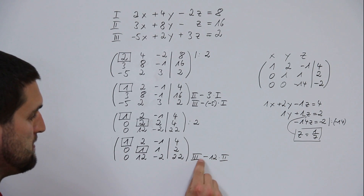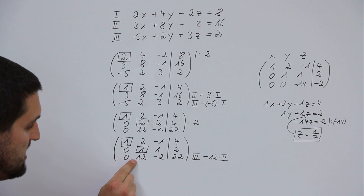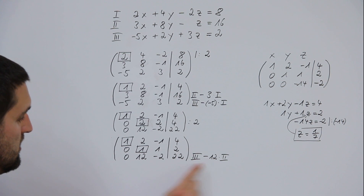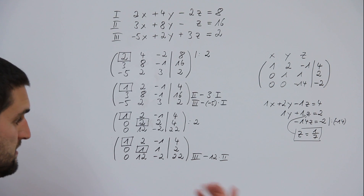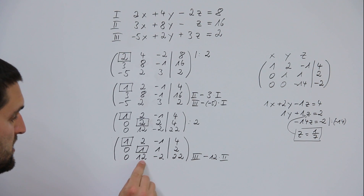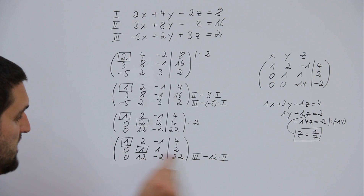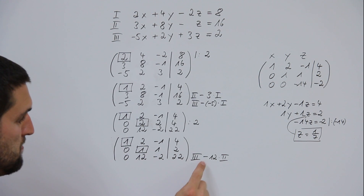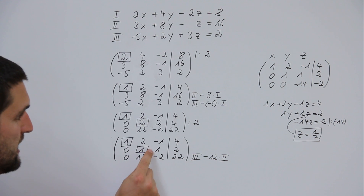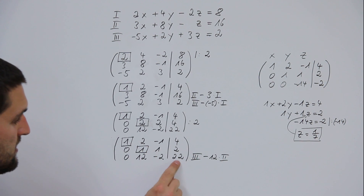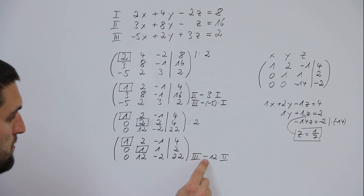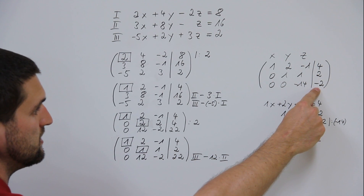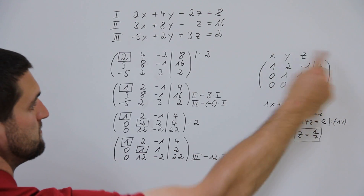The last step is line three minus whatever stands here times two. Calculating: twelve minus twelve times two is zero, minus two minus twelve times one is minus fourteen, twenty-two minus twelve times two is minus two. So you have the result like this.